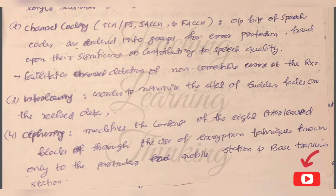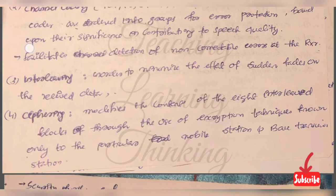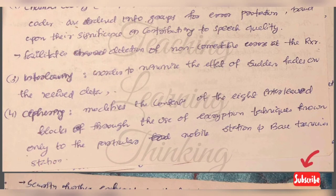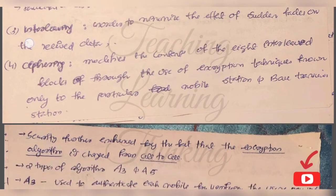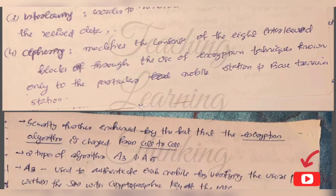The next one is interleaving, to minimize the effect of sudden fades on the receiver data. The sudden loss of data is minimized using interleaving. The next one is ciphering. Ciphering modifies the content of interleaving blocks through the use of encryption techniques.